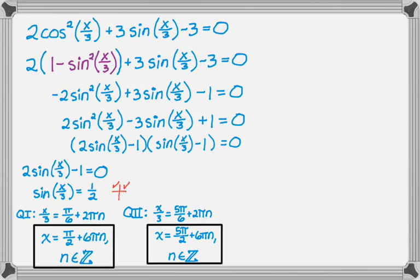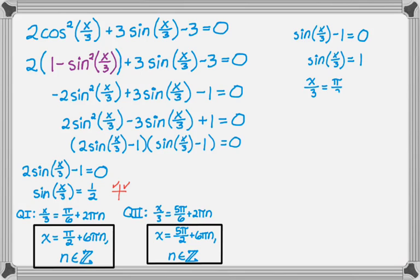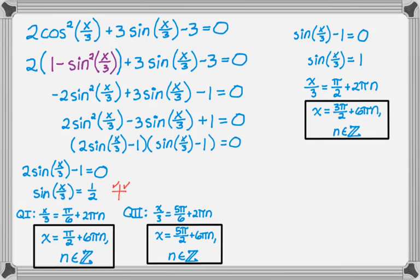You definitely want to check those — I've checked them on a calculator; they are solutions. Now for the other factor: sine of x over 3 minus 1 equals 0, so sine of x over 3 equals 1. That happens at pi over 2, so x over 3 equals pi over 2 plus 2 pi n, which means x equals 3 pi over 2 plus 6 pi n. You'd want to check that also. So those are the three families of solutions.